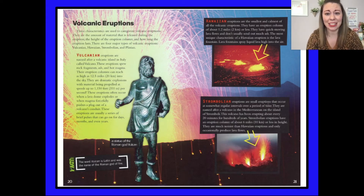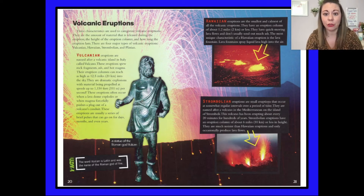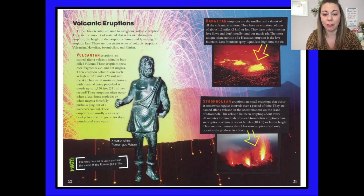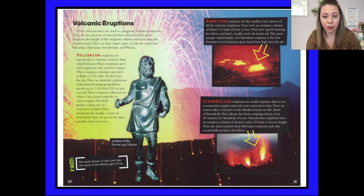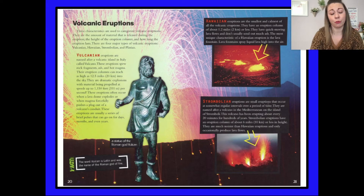Moving on to Hawaiian eruptions — Hawaiian eruptions are the smallest and calmest of all volcanic eruptions. They have an eruption column of about 1.2 miles or two kilometers or less. They have quick-moving lava flows and don't usually send out much ash. The most unique characteristic of a Hawaiian eruption is the lava fountain — lava fountains spray liquid lava high into the air, and you can see a picture of that. Strombolian eruptions are small eruptions that occur at somewhat regular intervals over a period of time. They are named after a volcano in the Mediterranean on the island of Stromboli, which has been erupting about every 20 minutes for hundreds of years. Strombolian eruptions have an eruption column of about six miles or 10 kilometers or less and are much noisier than Hawaiian eruptions.